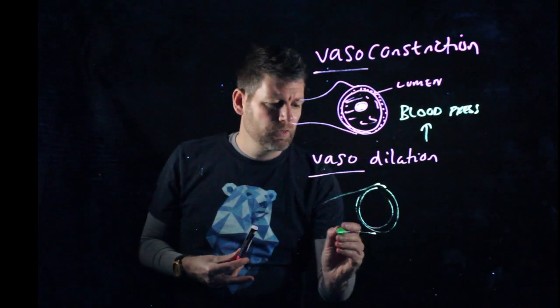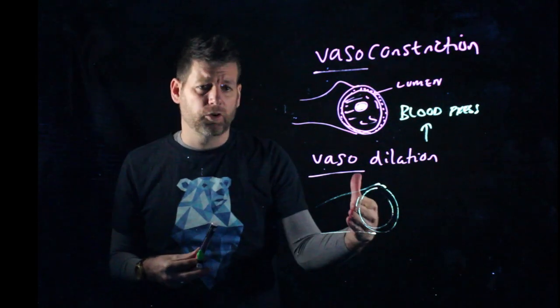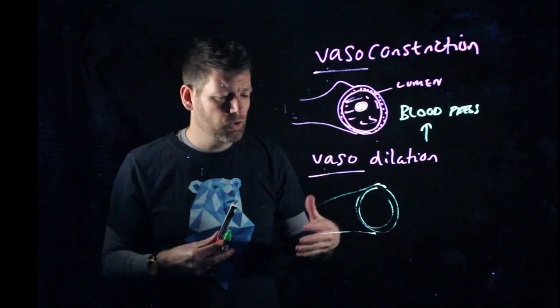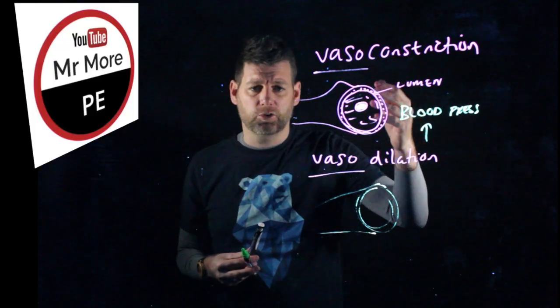So the lumen stays nice and wide and there's a lot of space inside there for the blood to flow. So blood pressure is not going to go up with vasodilation but it is going to go up with vasoconstriction.